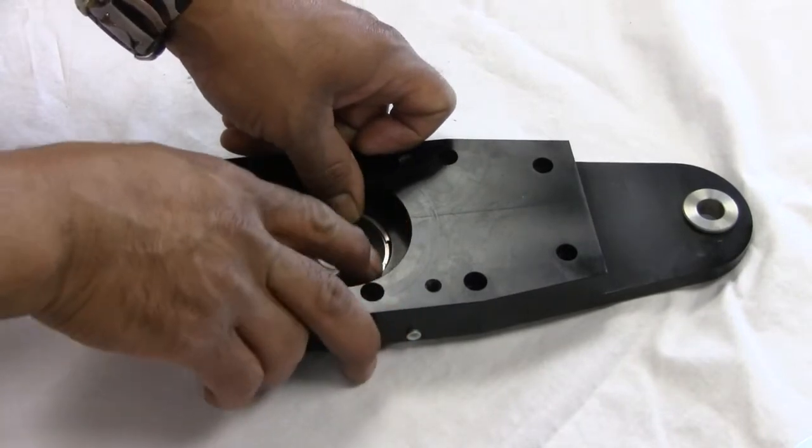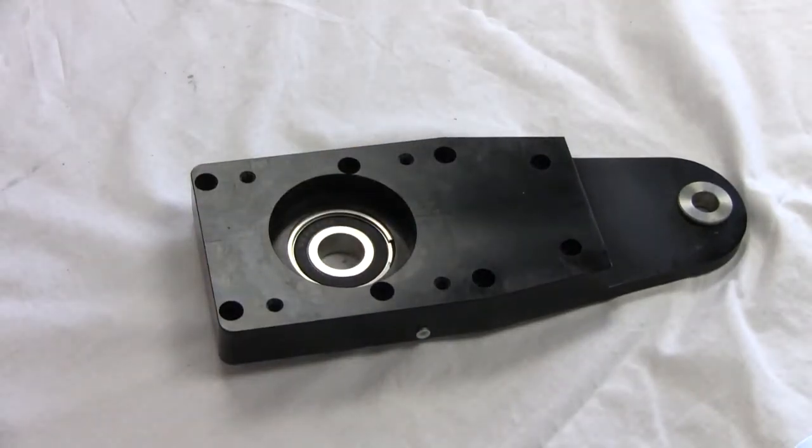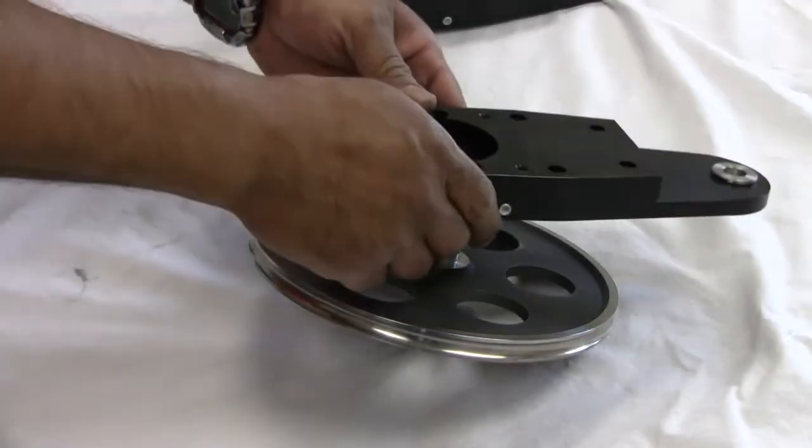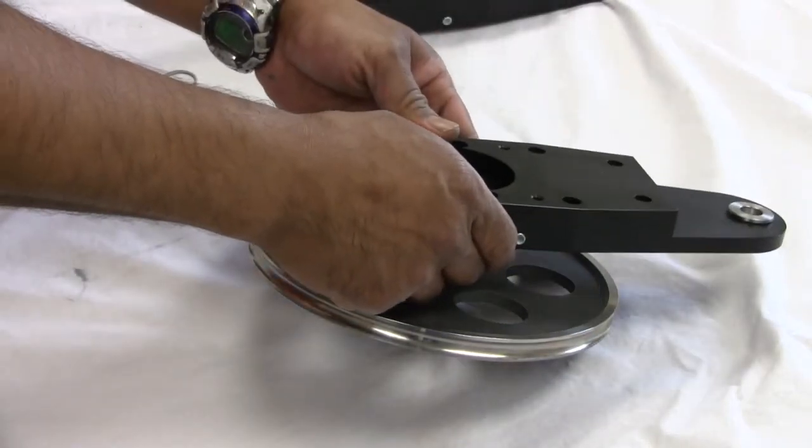Repeat the same bearing replacement procedure on the other side plate. Slip the side plates over the wheel shafts and replace the snap rings.